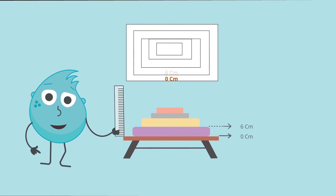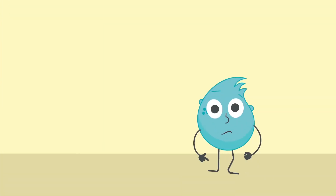Using a scale, let's measure the height of the first book, which comes to six centimeters. We will write this on the first rectangle. Now measure the height of the next book, which comes to 12 centimeters. Again, mark the same on paper as shown. Continue the same for all the books and mark all measurements on paper. So now what we have got on the paper can be called a contour line map of books.